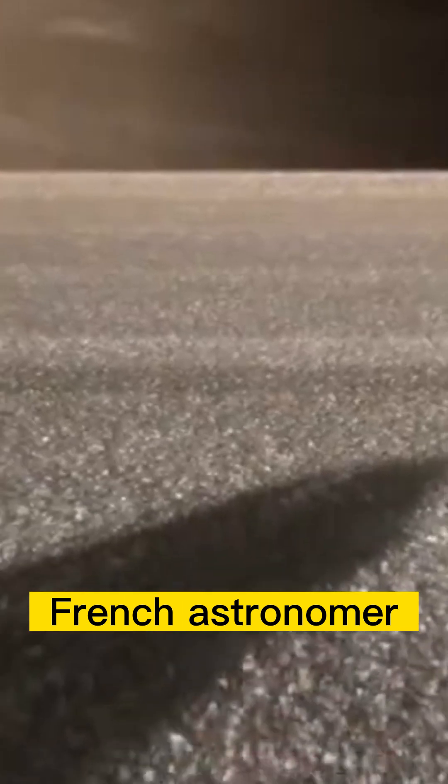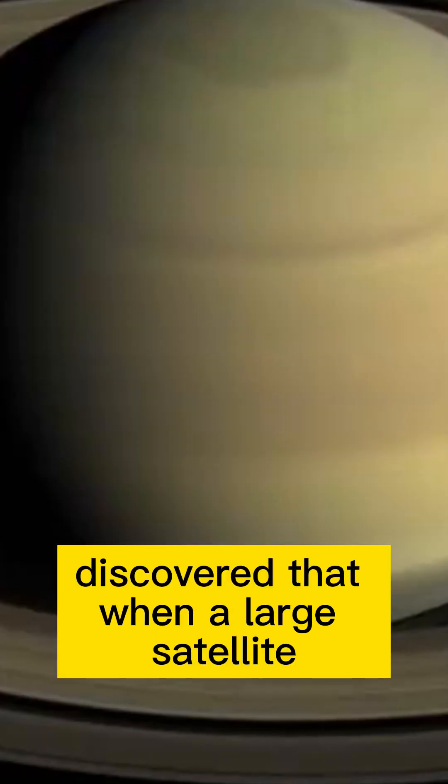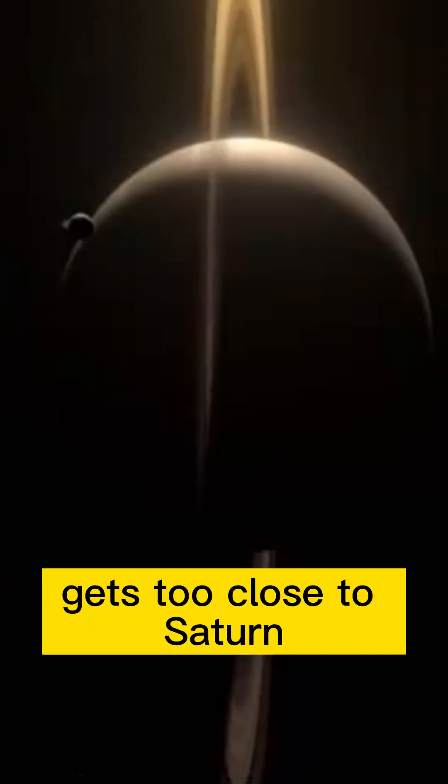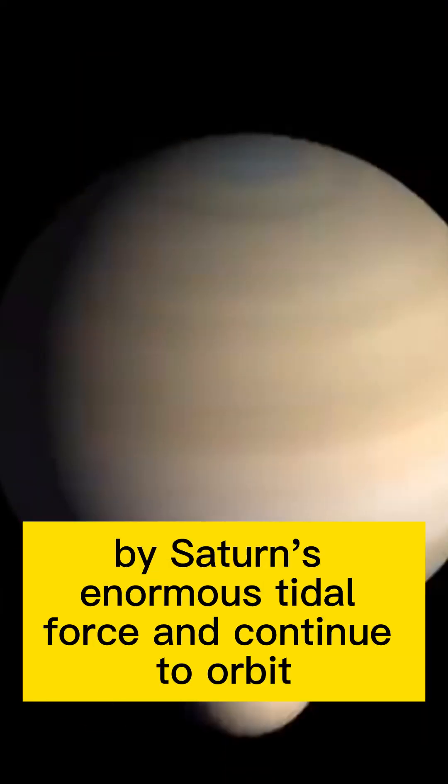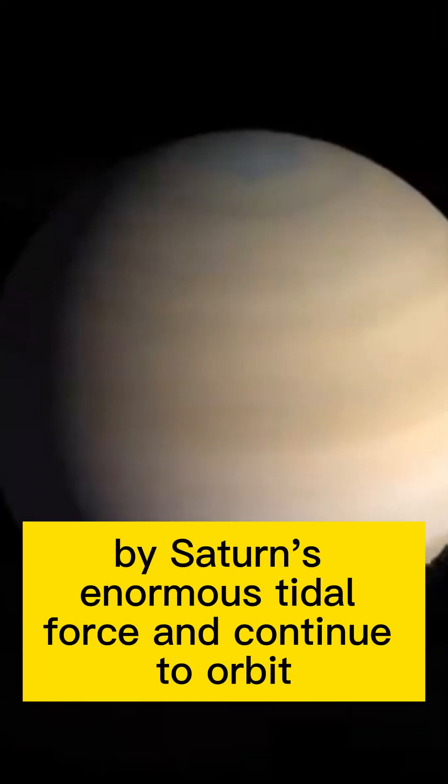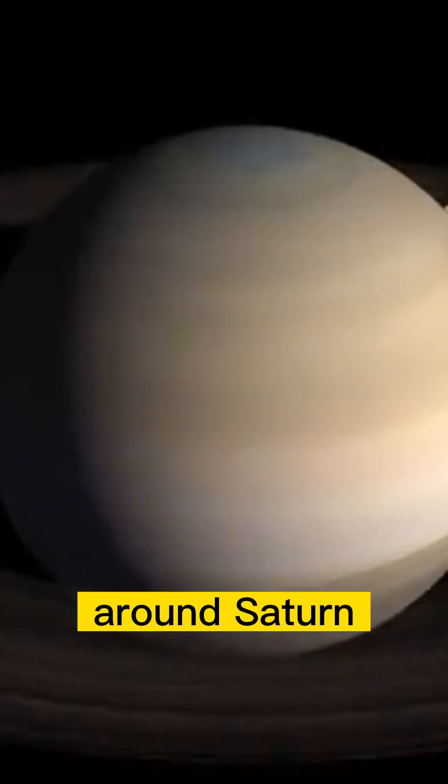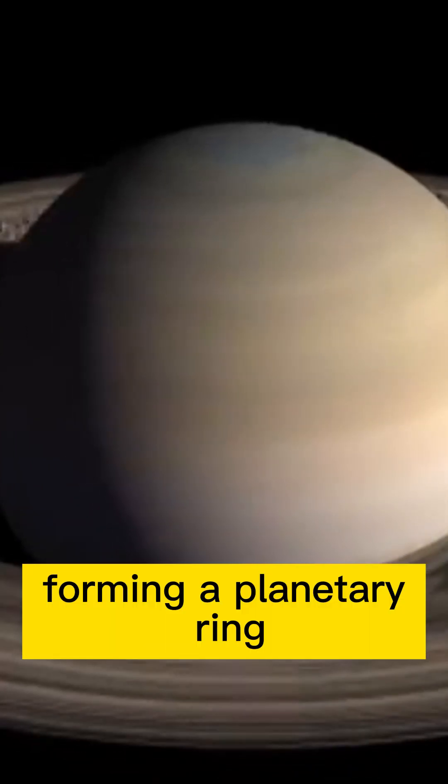As early as 1850, French astronomer Edouard Roche discovered that when a large satellite gets too close to Saturn, it will be pulled apart by Saturn's enormous tidal force and continue to orbit around Saturn, forming a planetary ring.